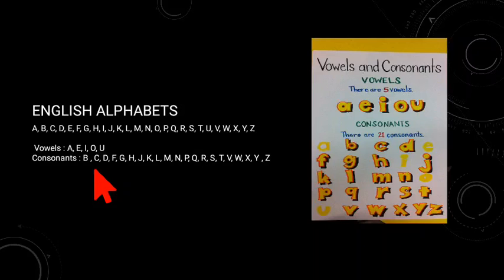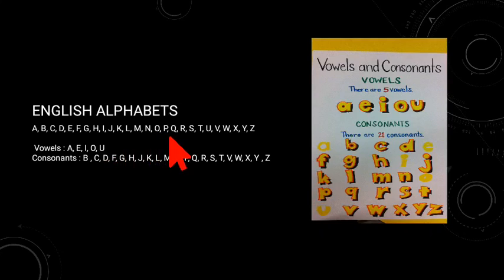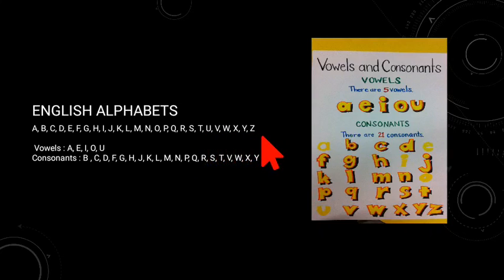Dear children, already we know the English alphabet. Once again I repeat the alphabet — listen carefully. A-B-C-D-E-F-G-H-I-J-K-L-M-N-O-P-Q-R-S-T-U-V-W-X-Y-Z. These are the 26 letters in the English alphabet.